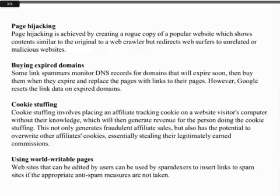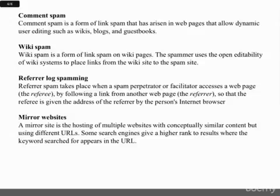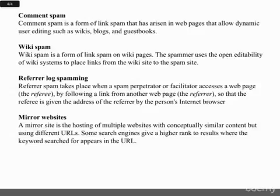Using world writable pages: websites that can be edited by users can be used by spam indexers to insert links to spam sites if the appropriate anti-spam measures are not taken. Comment Spam is a form of link spam that has arisen in web pages that allow dynamic user editing, such as wikis, blogs, and guestbooks. Wiki spam is a form of link spam on wiki pages — the spammer uses the open editability of wiki systems to place links from the wiki site to the spam site.